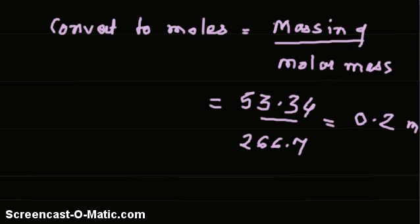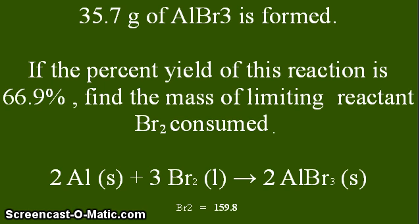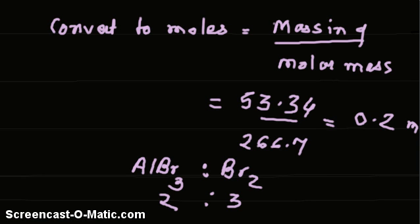Now, establish the ratio between the number of moles of the product and the number of moles of the limiting reactant. From this reaction, 2 moles of AlBr₃ are formed from 3 moles of Br₂. Therefore, the ratio is 2:3.